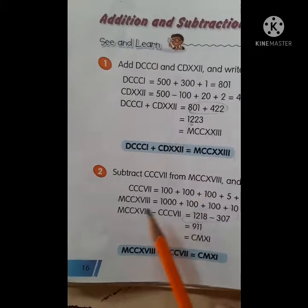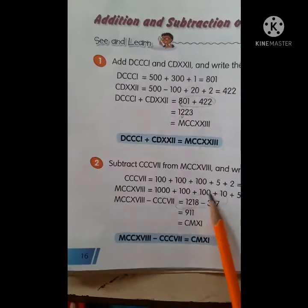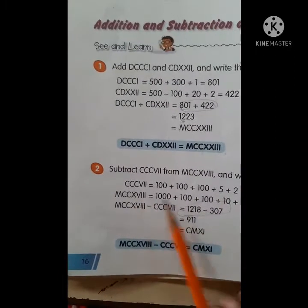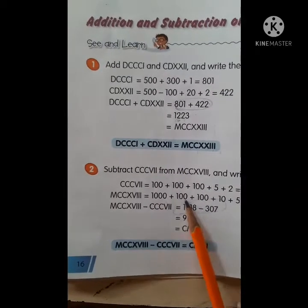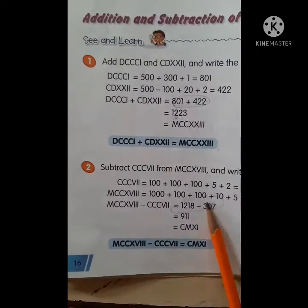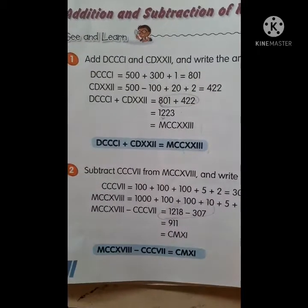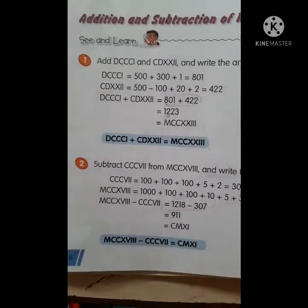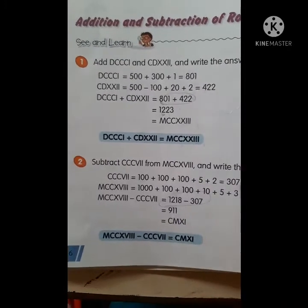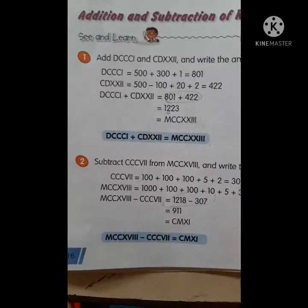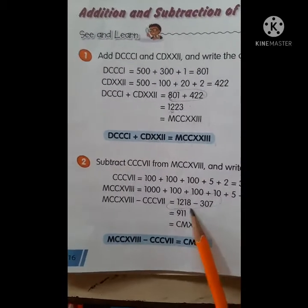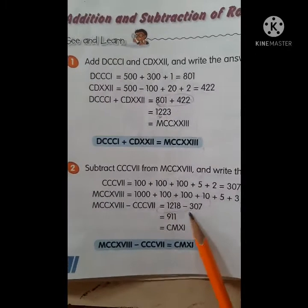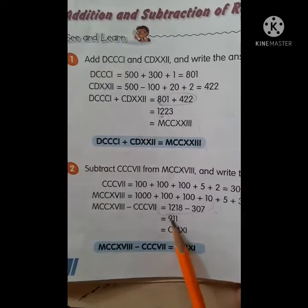The second numeral: M is 1000, CC is 200, X is 10, V is 5, and III is 3. So 1000 plus 200 plus 10 plus 5 plus 3 equals 1218. Now we subtract: 1218 minus 307 equals 911.